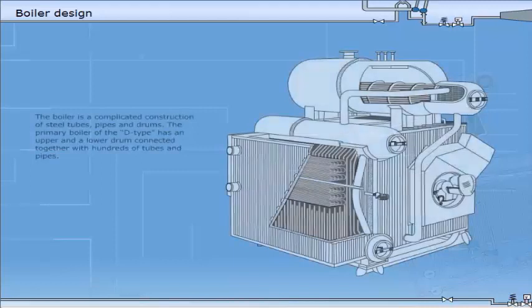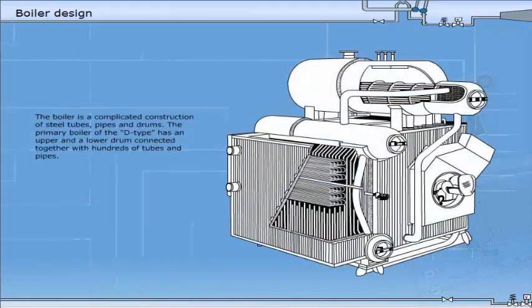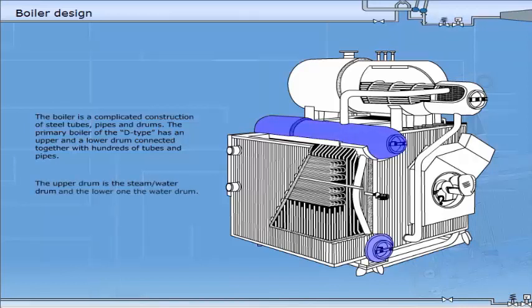The boiler is a complicated construction of steel tubes, pipes and drums. The primary boiler of the D type has an upper and a lower drum connected together with hundreds of tubes and pipes. The upper drum is the steam water drum and the lower one the water drum.